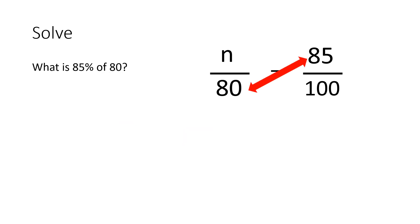Let's solve by multiplying proportionally. We will multiply diagonally wherever we see numbers. In this case, we have factors of 80 and 85. 80 times 85 will equal 6,800. We will divide this number by the only remaining number, which is 100, and this will equal 68.